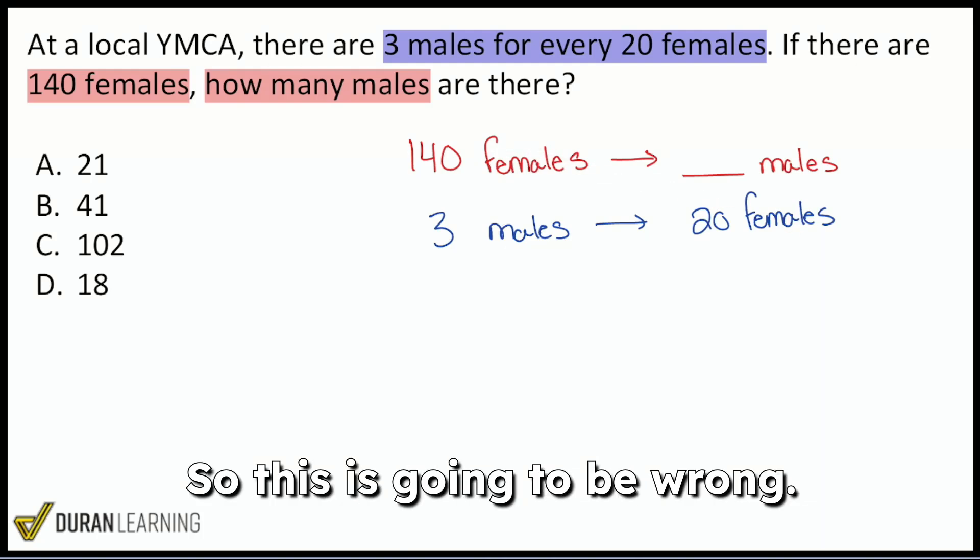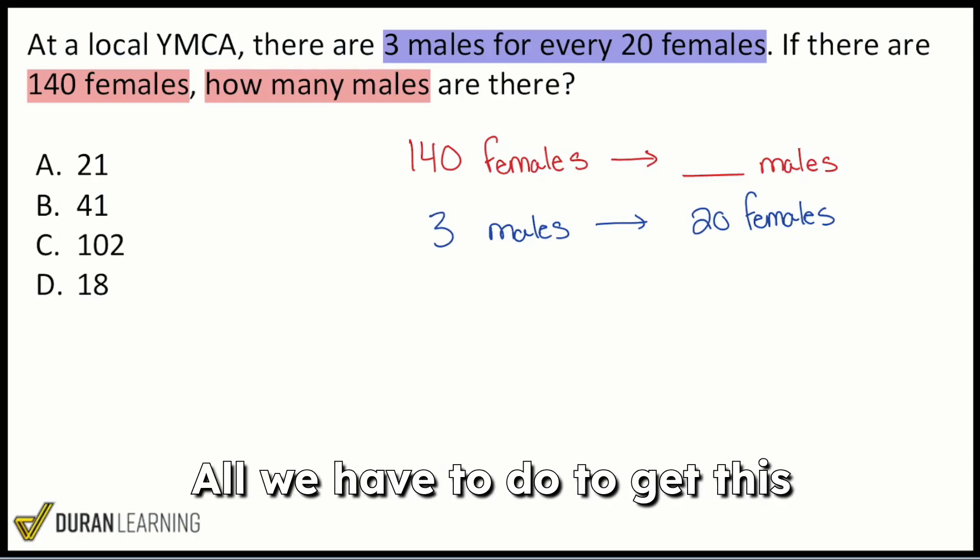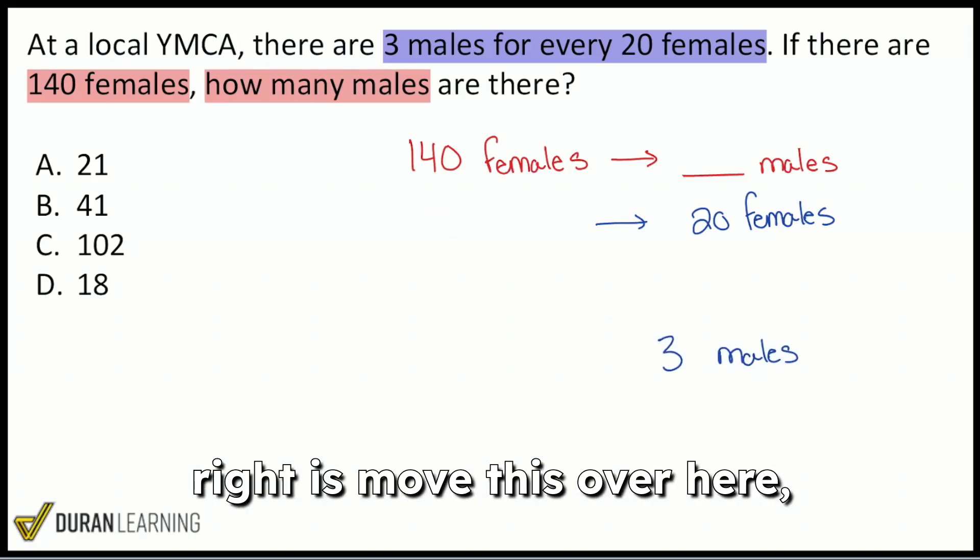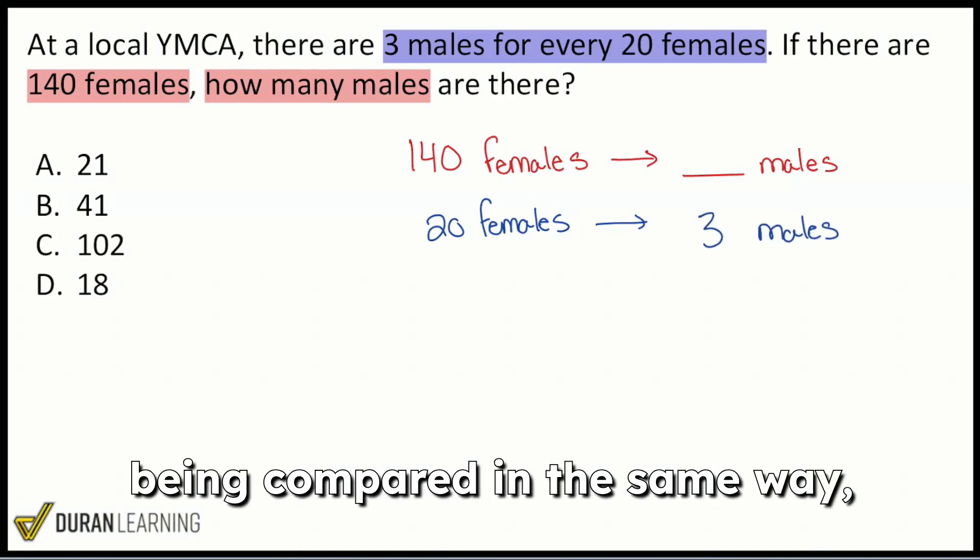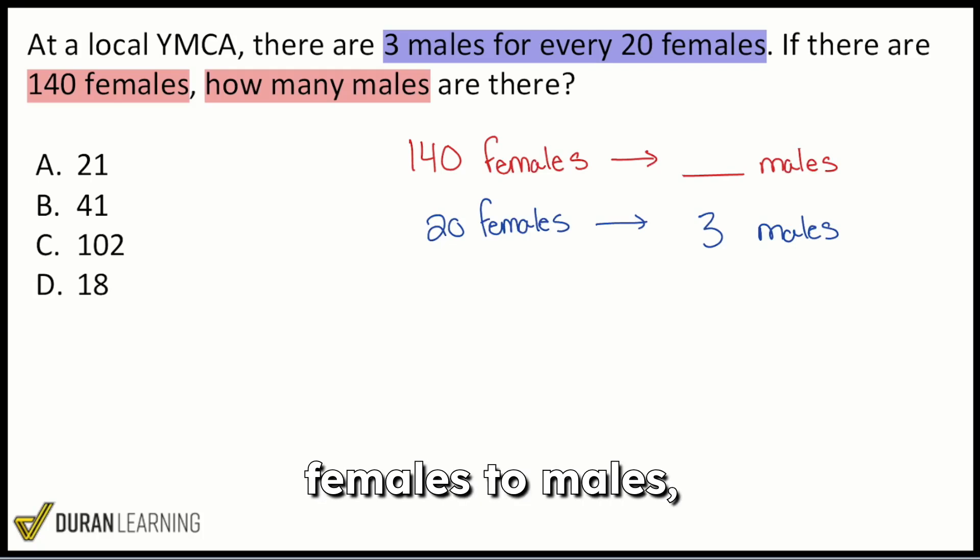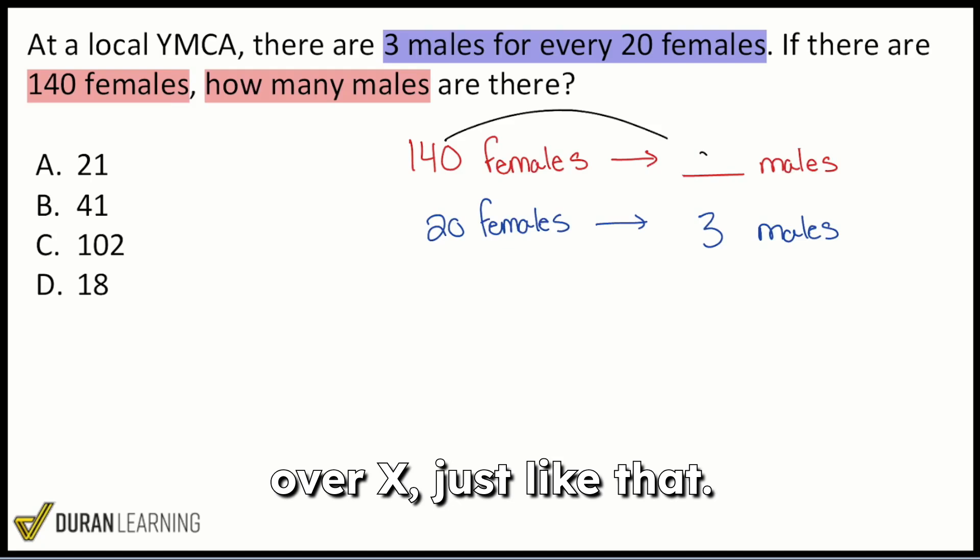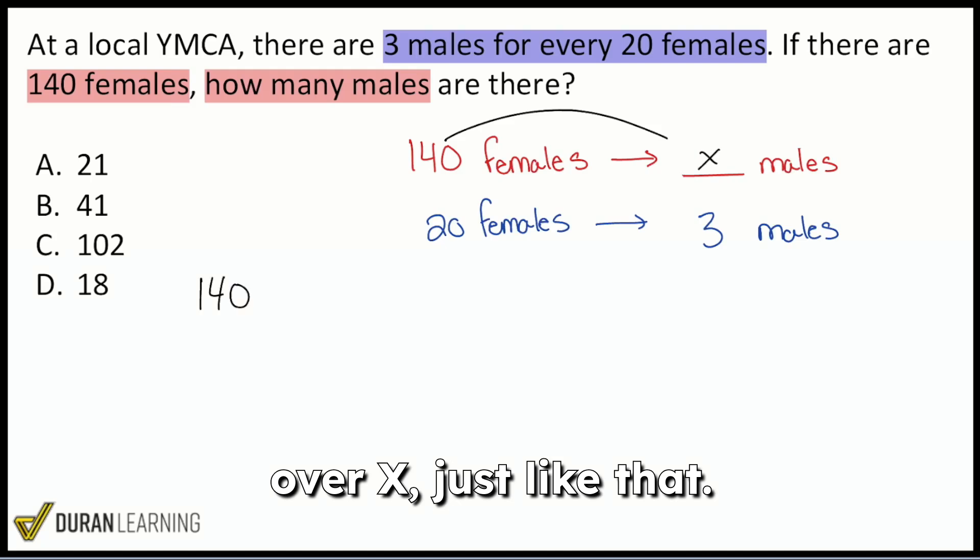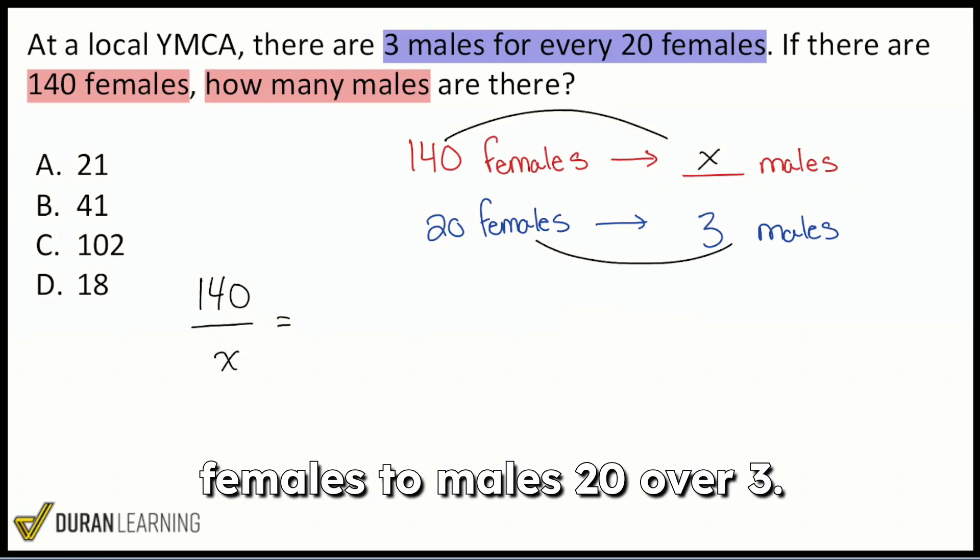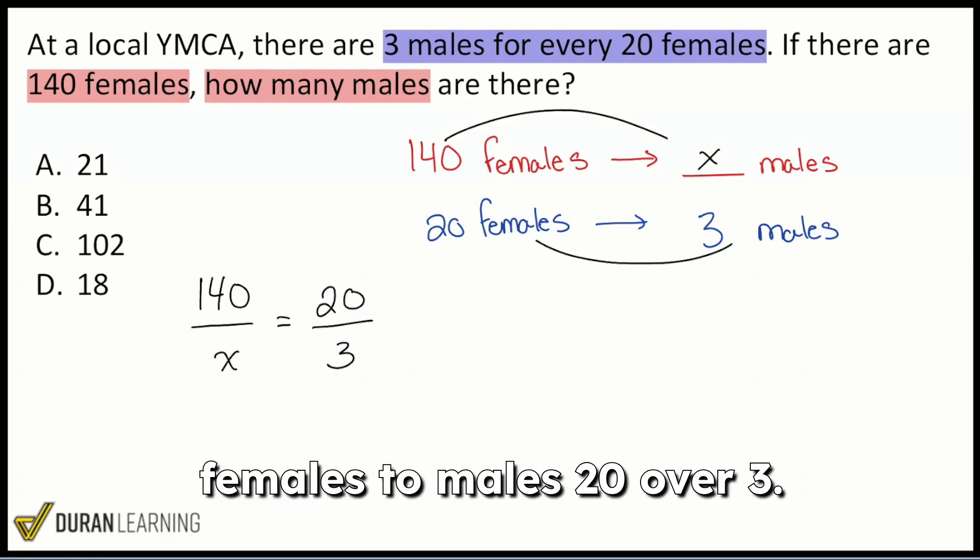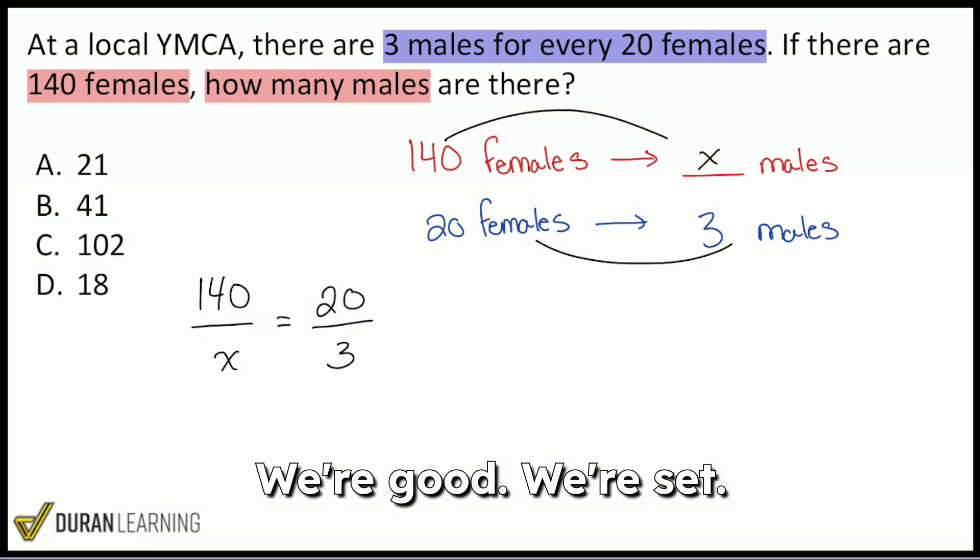So this is going to be wrong. This is the wrong setup. All we have to do to get this right is move this over here, move that over there. And we're good. Now we have the same things being compared in the same way. Females to males. And there we are. So let's set up that proportion nice and easy. We'll go ahead and say 140 over x, just like that. So females to males equals females to males, 20 over 3. So there we go. We're good. We're set.